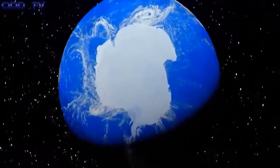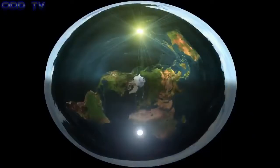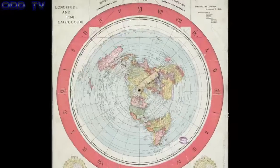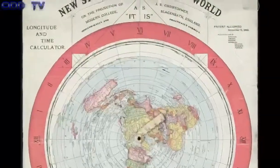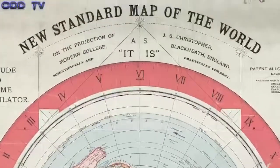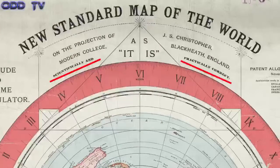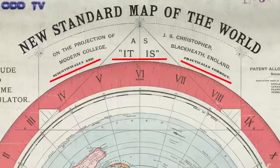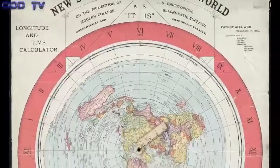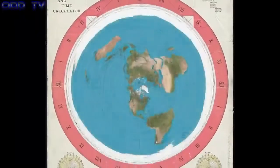In the currently most accepted model, Antarctica is not a continent but a 360-degree landmass made up of ice that holds the oceans within. When we look at Gleason's map from 1892, which states at the top that it's scientifically and practically correct, we see this Antarctic ice rim.